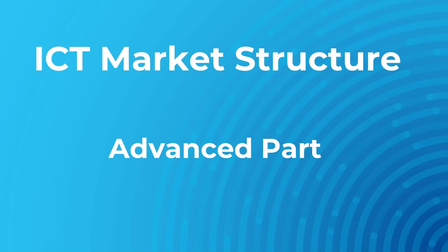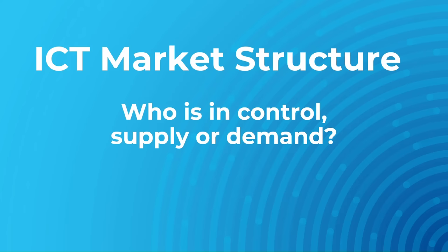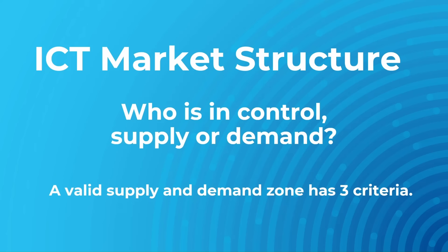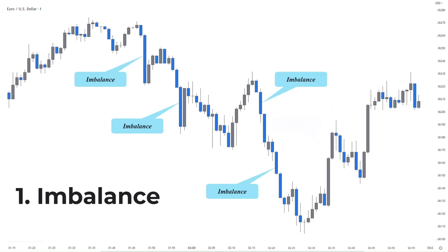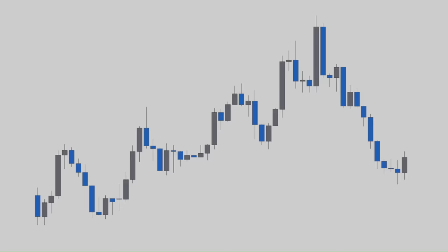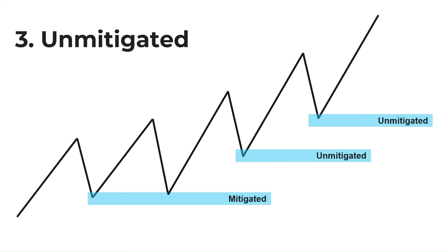When discussing the ICT concepts, market structure is all about who is in control — supply or demand. The key point is that a valid supply and demand zone has 3 criteria, and the mitigation or break of these valid levels allows us to identify the market direction. First, it must have an imbalance — a lack of proportion between buyers and sellers which causes a massive move. Second, it must break the structure or change the character. Third, it must be unmitigated. Supply and demand zones are one-time use, so previously mitigated zones are no longer valid. If a zone lacks any one of these criteria, it won't be considered a valid supply or demand.